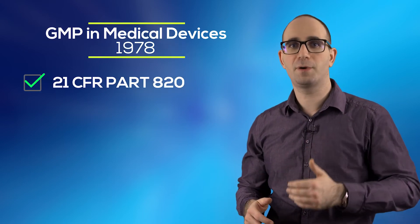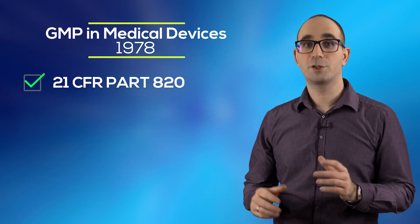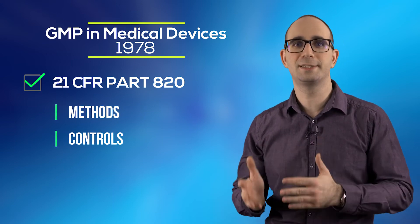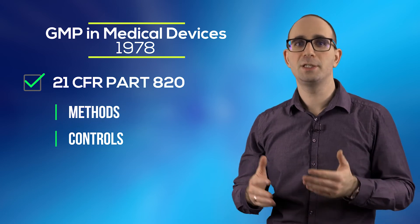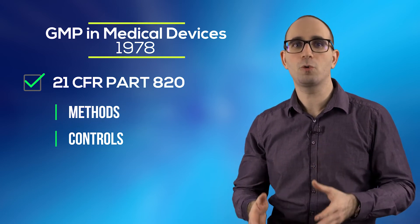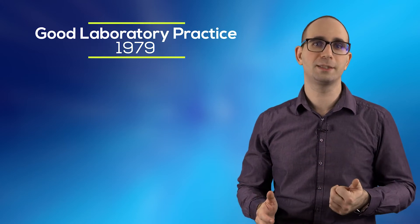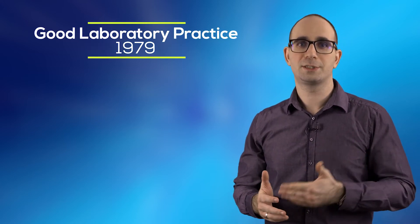Later in 1978 GMP for drugs was substantially revised and expanded to medical devices as well with 21 CFR 820. The regulations govern the methods used in the facilities as well as the controls used for the design, manufacture, packaging, labeling, storage, installation and servicing of all finished medical devices intended for human use. Not much later in 1979 the American government finalized the good laboratory practice, to regulate non-clinical laboratory studies for future potentially registered drugs.